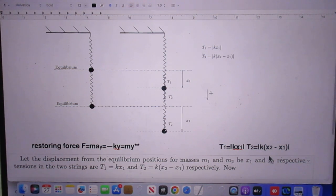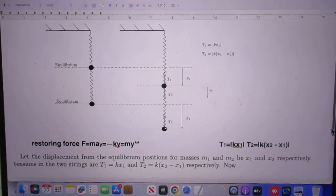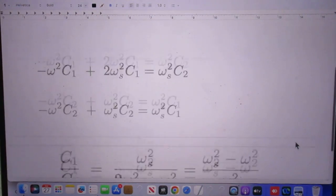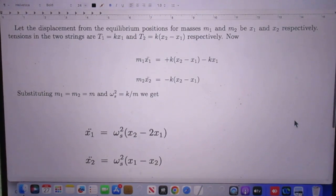So T2, the magnitude of T2, is k times x2 minus x1. And that will be very easy for you to confirm from this figure. Let the displacement from the equilibrium position for mass m1 and m2 be x1 and x2 respectively. So tensions in the two springs are T1, which we just discussed. And the tension in the other spring is k times x2 minus x1.